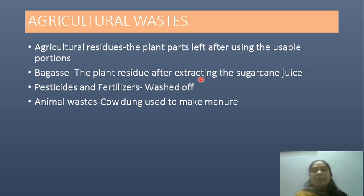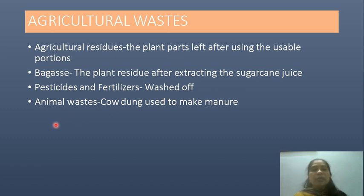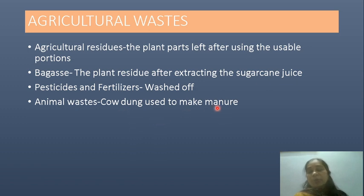Pesticides and fertilizers used in agriculture are washed off. Animal waste, such as cow dung, is used to make manure, and in villages it is also used as fuel.